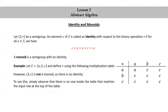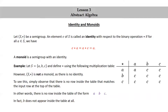To see this, simply observe that there is no row inside the table that matches the input row at the top of the table. In other words, there is no row inside the table of the form A, B, C. In fact, B does not appear inside the table at all.